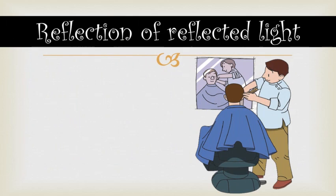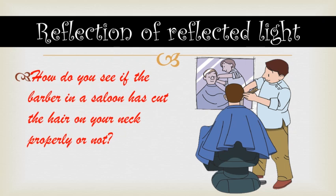Next, let's learn about the reflection of reflected light. How do you see if the barber in a saloon has cut the hair on your neck properly? In a saloon, there are mirrors in front and behind you. The image of the back of your head is formed in the back mirror, and the image of that image is formed in the front mirror — allowing you to see how your hair at the back is cut.